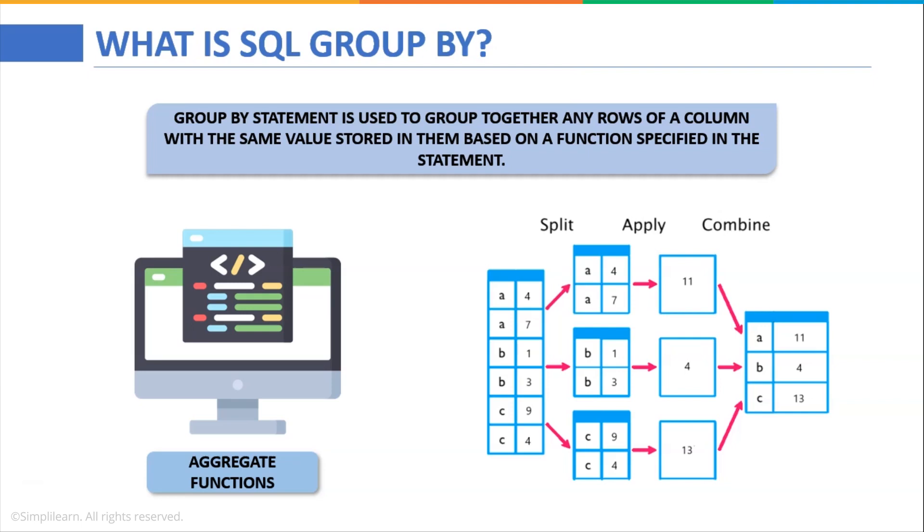Now if you consider this example here, we have two columns and we have three different items A, B, C having different values. Now you can see A has two values 4, 7, B has 1, 3 and C has 9, 4.